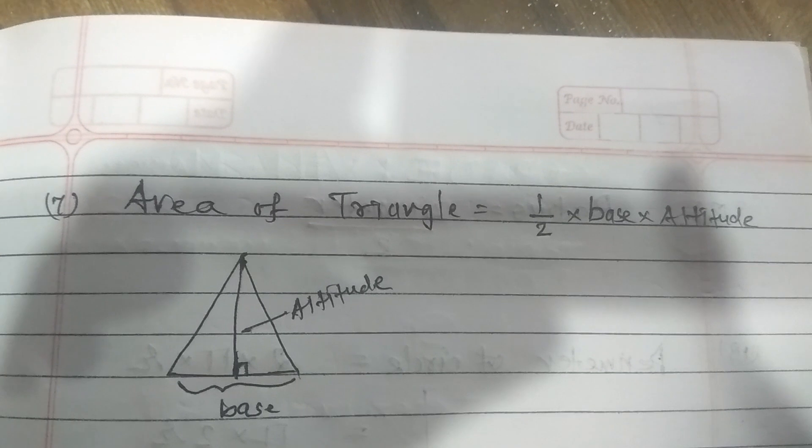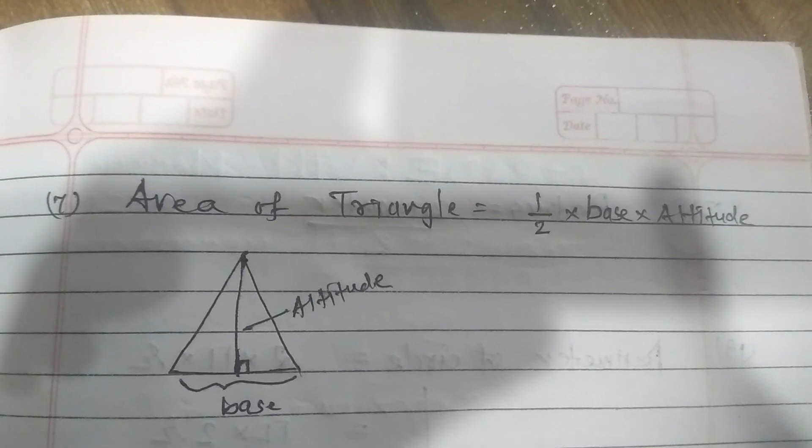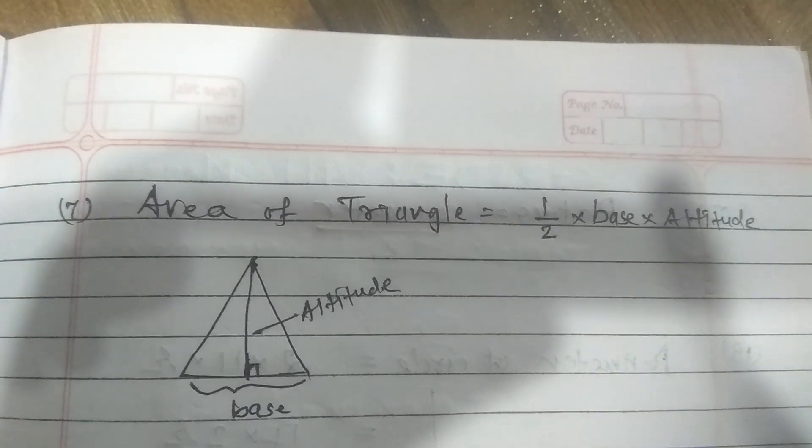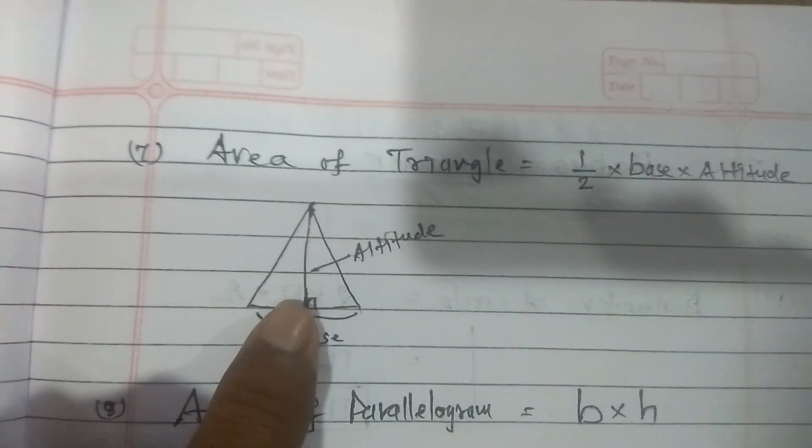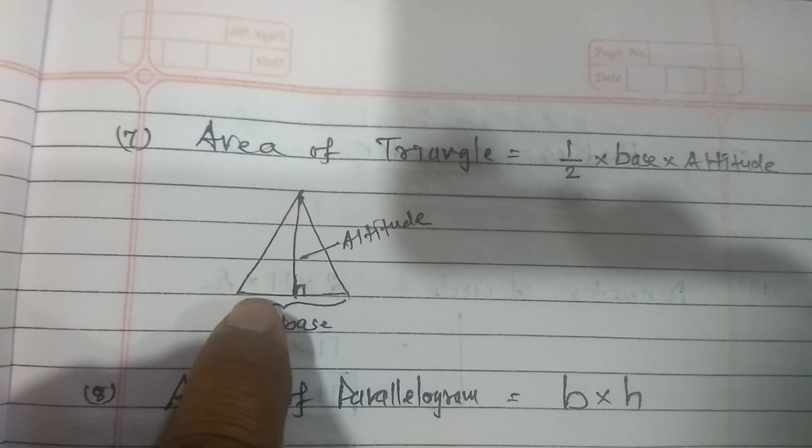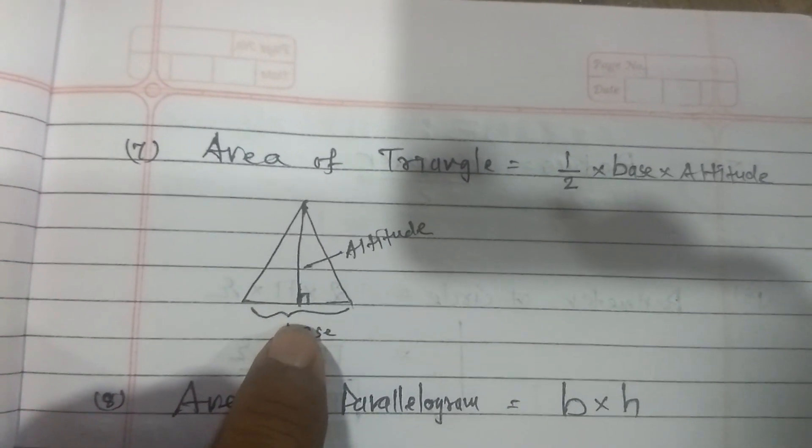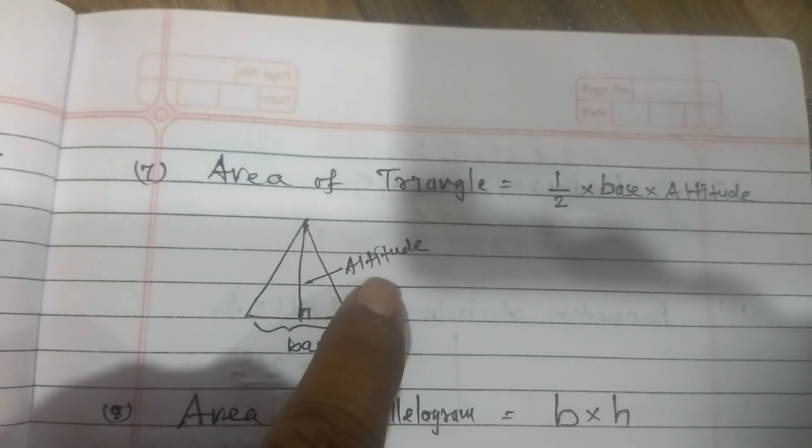Next formula, area of triangle. Here I have drawn the triangle. You see in that, altitude is there. That altitude is always drawn on the base perpendicularly. Here, a small square is there which represents 90 degrees. So this is a straight line which falls on the base. So the formula is half of base multiplied by altitude.